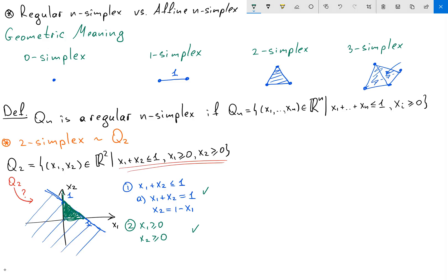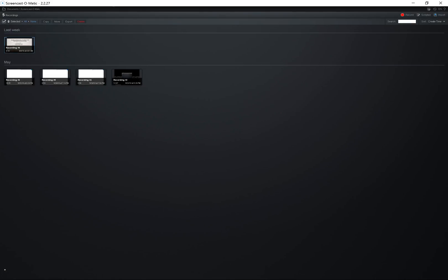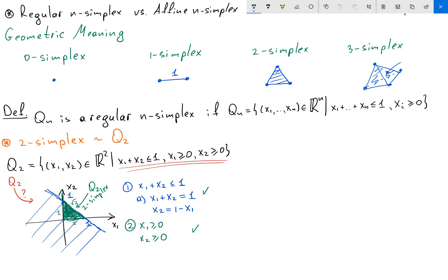And you can see, yes, indeed, this triangle is actually my Q2. It's actually my two simplex. The only difference is this side is 1 and this side is 1, but this side is square root of 2. So I see what is going on. If I want to get exactly the simplex when all sides of my triangle is going to be 1, 1, 1, I need to define what is the affine n-simplex.